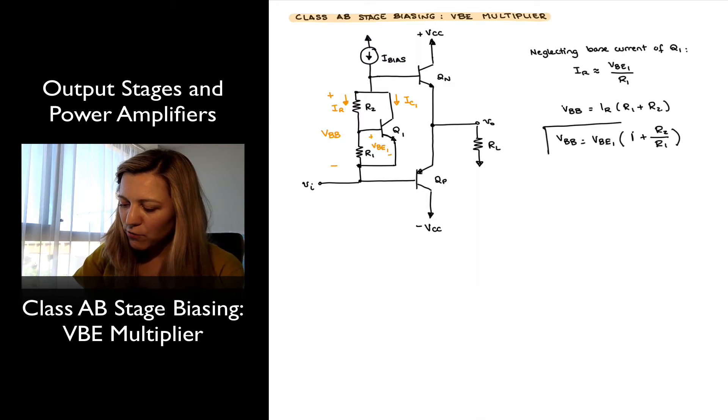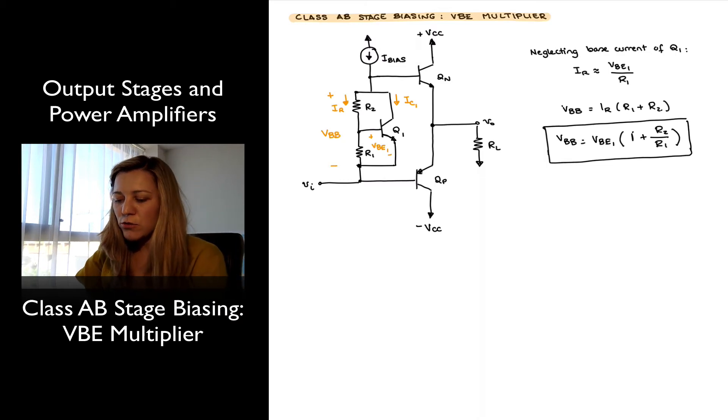So now I have come up with an expression for my bias voltage VBB which is proportional to (1 plus R2 over R1). Basically, the designer can control it by setting the ratio of those two resistors, and as we know in IC design...